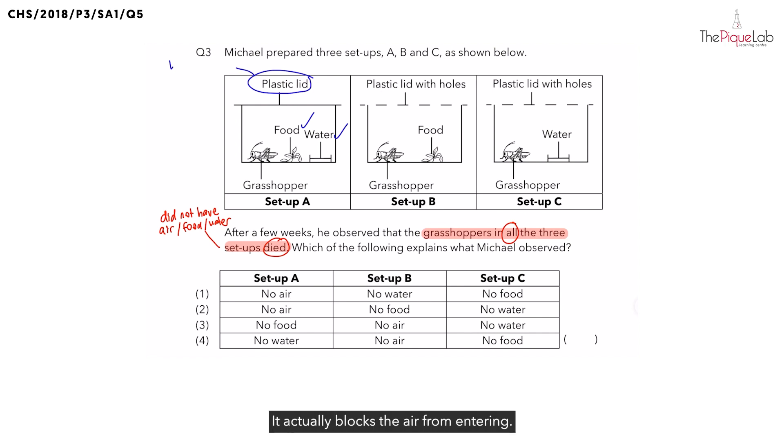So, we can write this down. It actually blocks the air from entering. Which means, did the grasshopper in setup A have enough air to survive? Answer is no. So, for setup A, we can write this down. We know that it did not have air. Which means, which options are possible? Options 1 and 2.